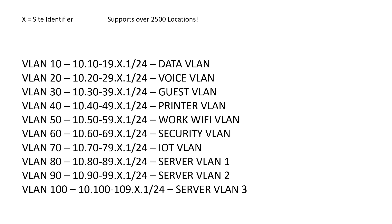The third octet, where you see the X, is where I place my branch location identifier. With this setup I can support over 2,500 locations if I chose to. A lot of people like to ask, why don't you just use the second octet for your identifier? Well, if I use the second octet for my identifier, I can only support 255 or 256 locations. What you end up doing is having 10.10.0 for site 1, and whenever you go from 0 all the way up to 255, you just increment up to 11 — so VLAN 10 becomes 10.11.0 for site 256, 257, 258, and so on.